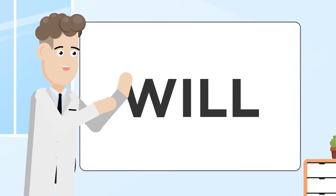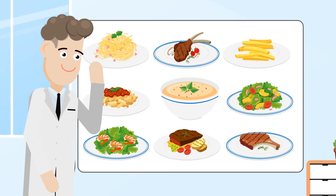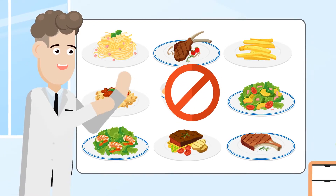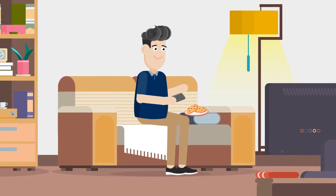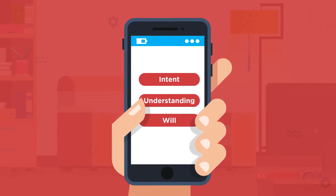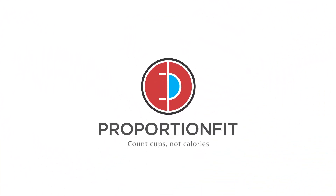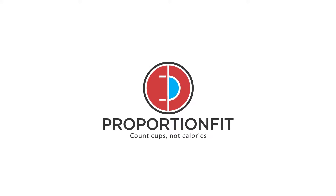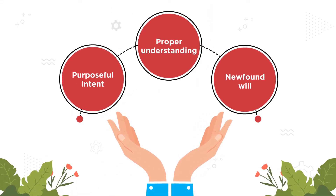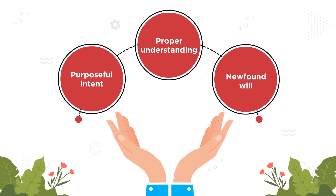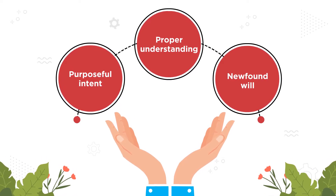We will help you discover that will and find the power to overcome food addiction, no matter how big or small. We get it, and we can help you with all of these things: intent, understanding, will. That's what Proportion Fit is all about. So if we bring together a purposeful intent, proper understanding, and newfound will, we will help you lose weight and gain better health.